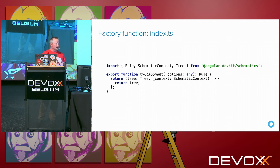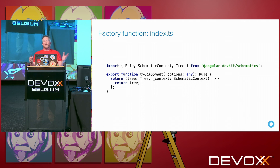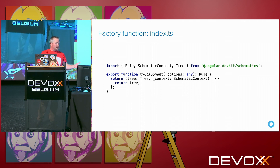The important thing to know here is that schematics won't perform any direct actions on your file system. You specify what you'd like to do on a tree. The tree is being returned and we're not doing anything to it, so by default this schematic will do nothing. The tree is a data structure with a set of files that already exist and a staging area of files that will be updated or added.